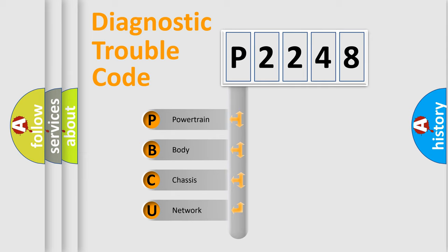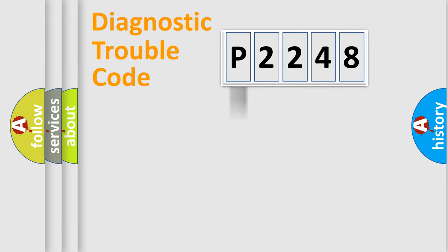We divide the electric system of automobile into four basic units: Powertrain, Body, Chassis, and Network.